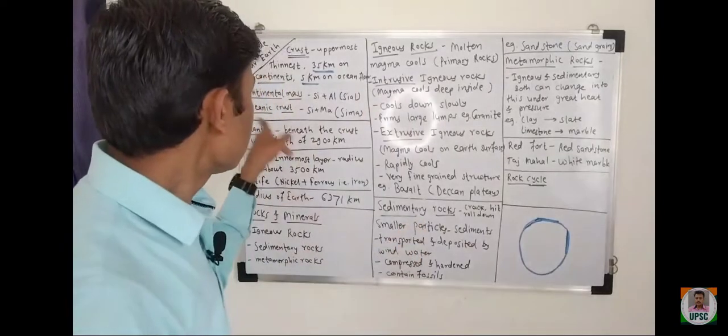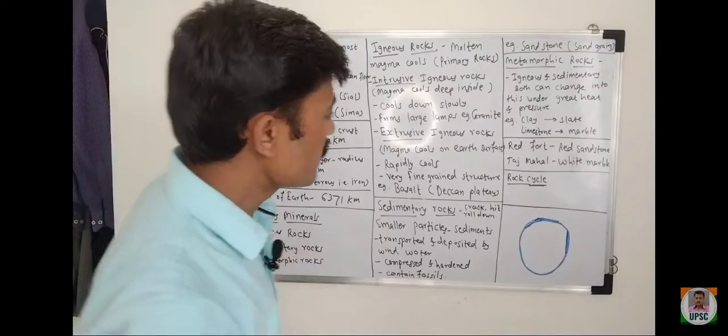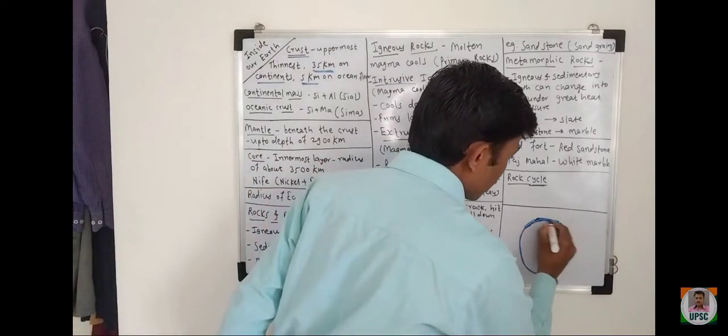Then what is the continental crust? So wherever crust is on the continental mass - means crust on the continent. Suppose this is some continent, suppose Asia continent or any continent, so that is called continental mass.